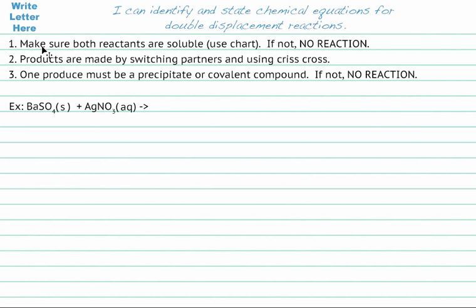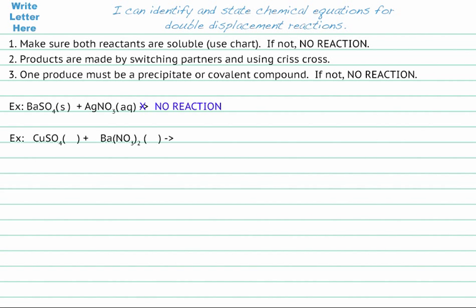Our first step says make sure both reactants are soluble. Since barium sulfate is not soluble, there's going to be no reaction — we're finished with that one. Now let's do another example.